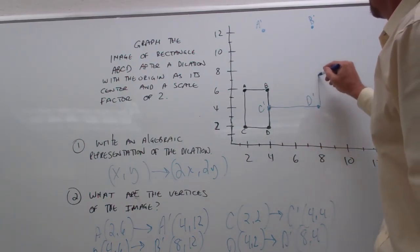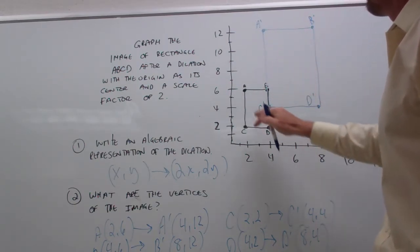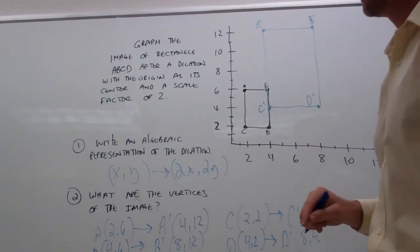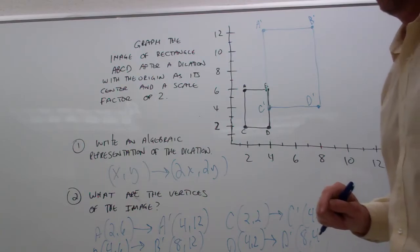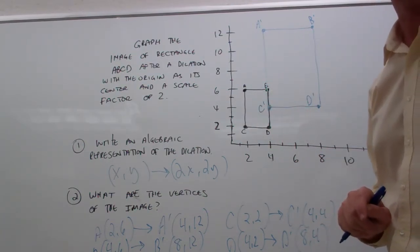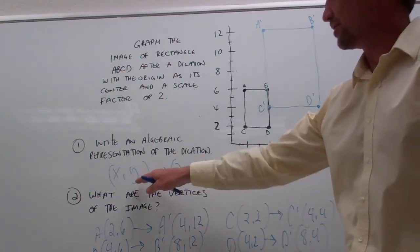And sure enough, when we sketch the image of rectangle ABCD after a dilation with a scale factor of 2, we end up with a rectangle about twice the size of our original, which is what we were looking for. So, that is how you would show a dilation algebraically.